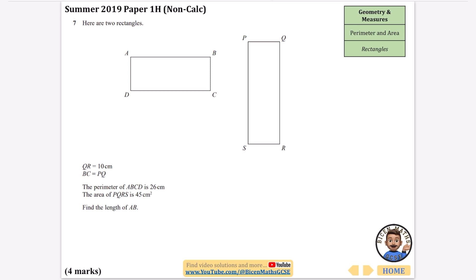Here are two rectangles, ABCD and PQRS, and it gives some extra information that is not on the diagram. I think the first thing I want to do is add that information. It says QR is equal to 10 centimeters, so I'm just going to write it in as 10.